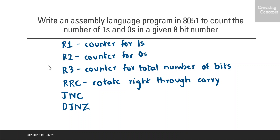For this we will consider three registers: R1 as a counter for 1s, R2 as a counter for 0s, and R3 as a counter for the total number of bits. We will also use the logical instruction RRC, which rotates right the accumulator with carry. The LSB of the accumulator enters into the carry flag, and the original carry enters into the MSB of the accumulator. All other bits are shifted by one position to the right, and carry is a part of the rotation loop.